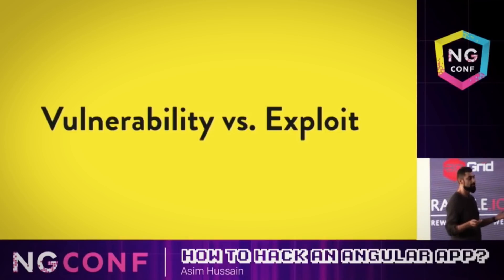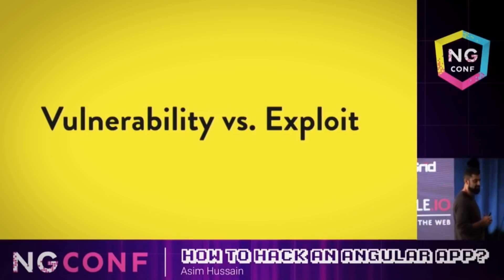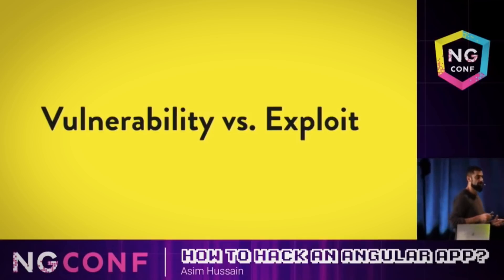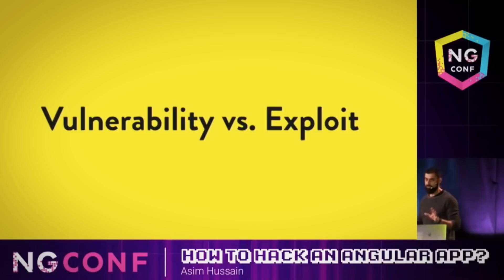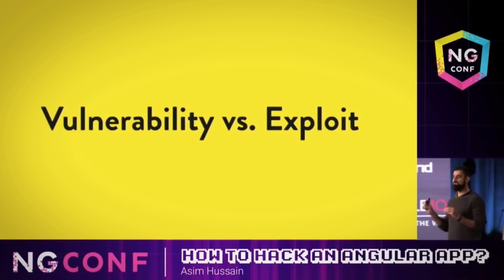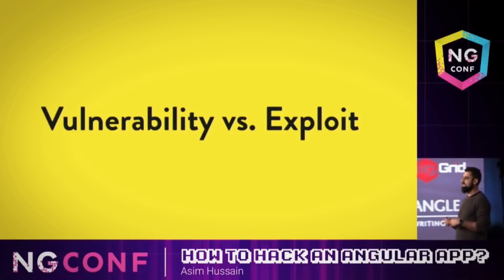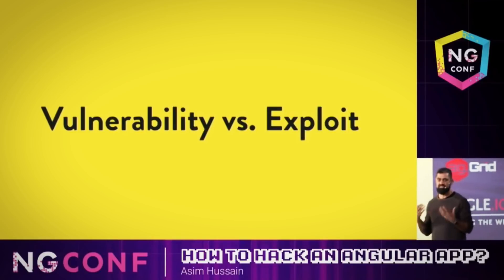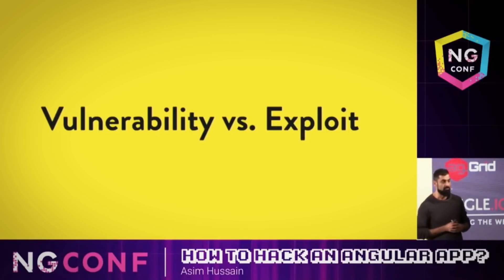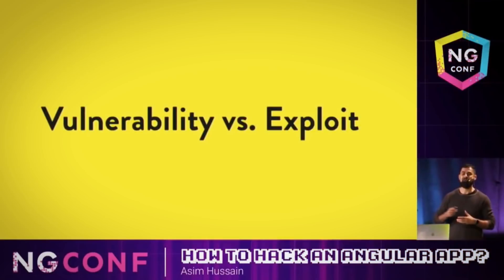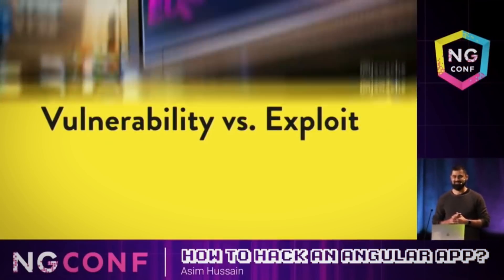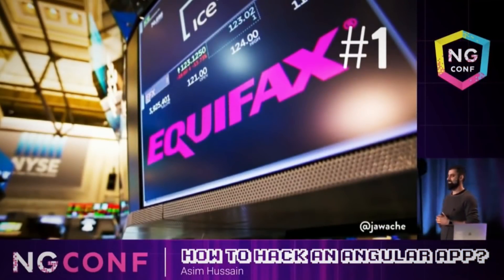A vulnerability is just a hole in your security — for example, not setting up a firewall is a vulnerability. An exploit is a series of commands or steps you take to advantage of a vulnerability to do bad things. And we're going to start off with the first story: Equifax.